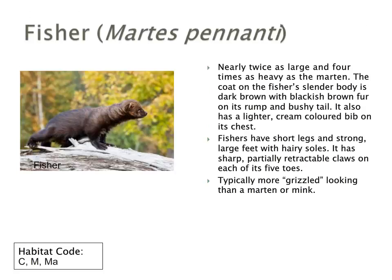A fisher is nearly twice as large and about four times as heavy as a marten. Its coat is much darker with blackish brown fur and a bushy tail as well. Fishers have very short legs and a grizzled looking appearance — notice the patterning showing more shades of brown and grey mixed in. They have very prominent ears and very large claws and paws.